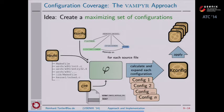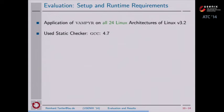We have evaluated this approach on all 24 architectures in Linux 3.2, using GCC 4.7 as the static checker. This is a version of GCC newer than what shipped with Linux 3.2, because in every new version of GCC you get better diagnostics — meaning compiler warnings and errors.